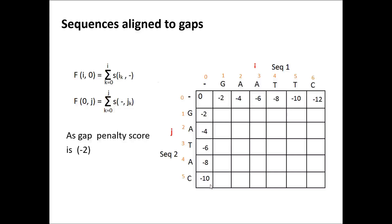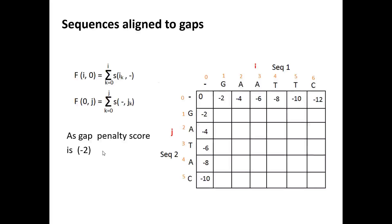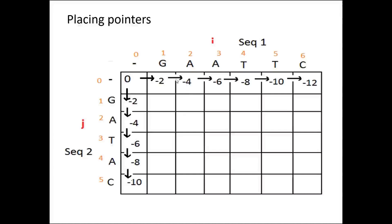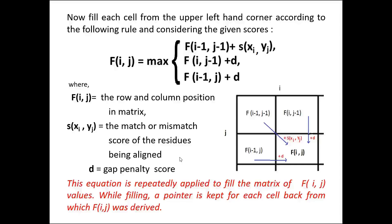Similarly for the y-axis, if the gap penalty score were minus 1 we would have minus 1, minus 2, minus 3, and so on. As the value of each box is derived from the score of the previous box, a pointer is placed indicating from which box it is derived. Next, all these boxes have to be filled starting from the top-left corner box. To fill these boxes we need to follow the formula, where three values are calculated and whichever is maximum is used to fill the box.